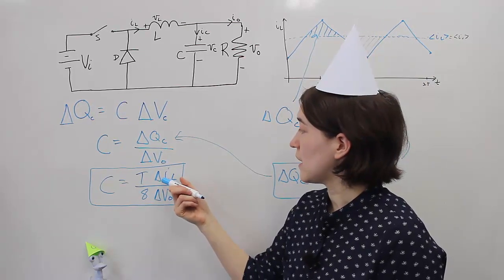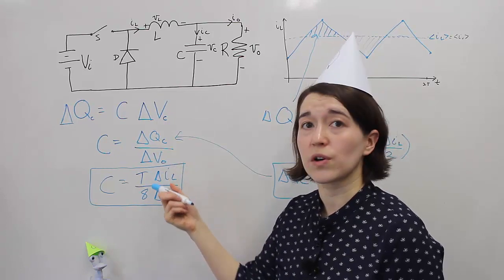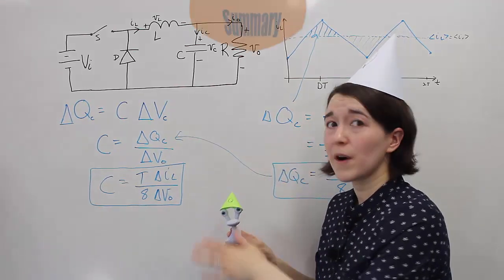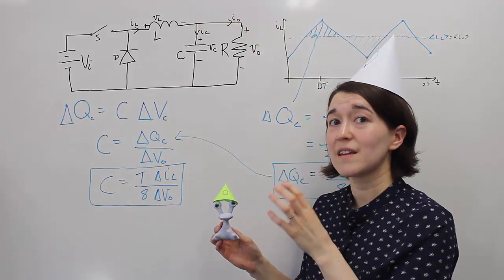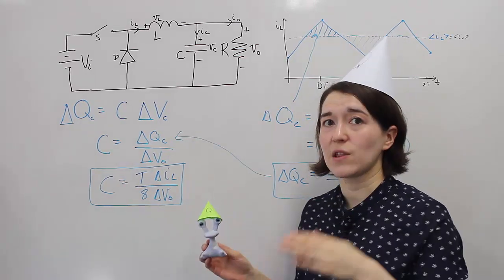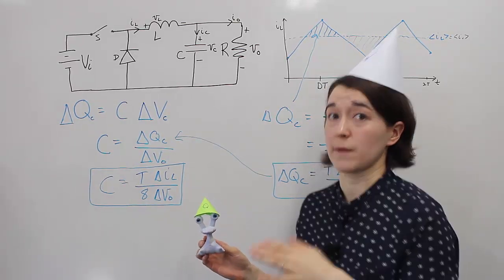The reason this is important is because the buck converter is different in this calculation for the capacitance value than the boost or the buck-boost converter.